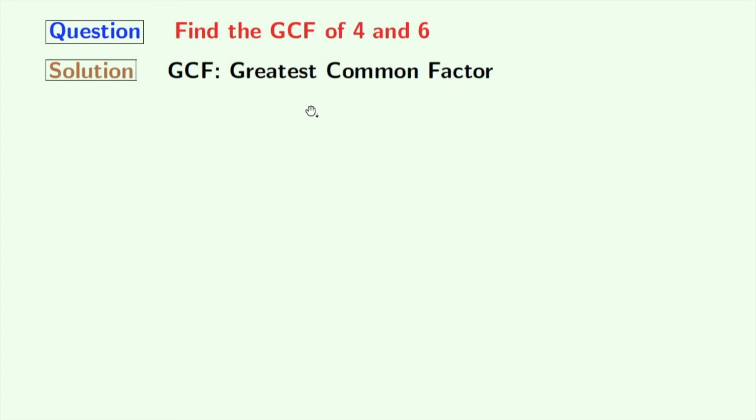Now, the strategy to find the GCF: we have to find first the factors of 4 and 6. The next step will be to find the common ones among those factors. And lastly, we will find which is the greatest one among those common factors.